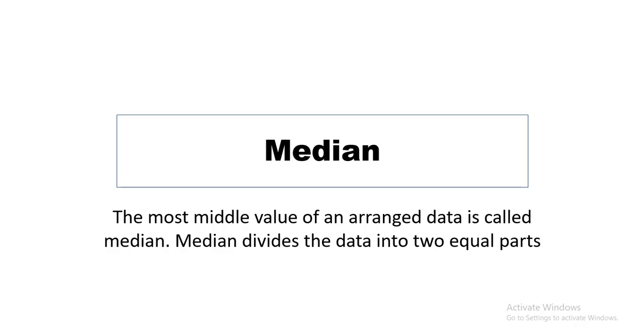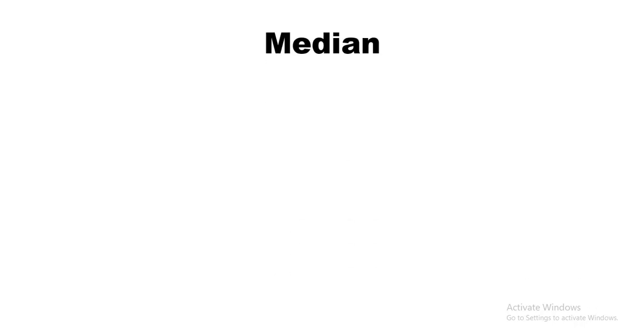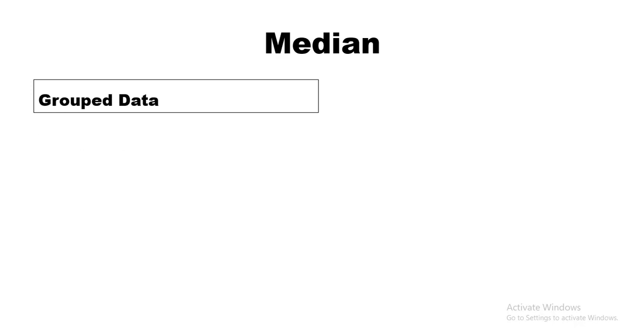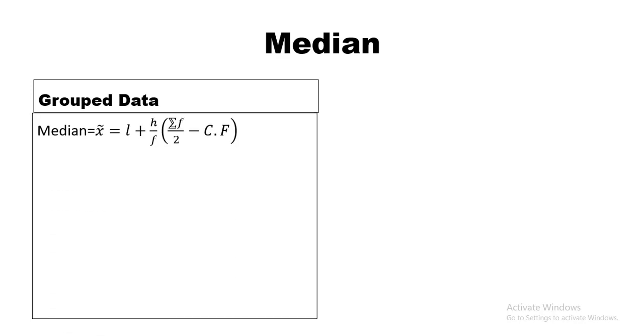Before moving on, let's look at the formulas for all types of data — grouped data and frequency distribution. The formula for grouped data is: Median = L + (H / ΣF) × (ΣF/2 − CF). This is the symbolic representation of median for grouped data.